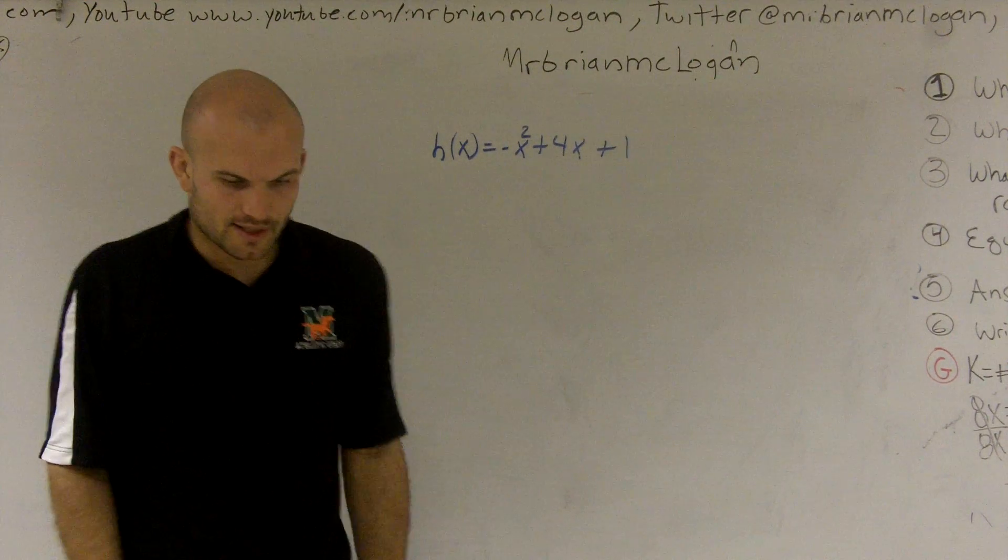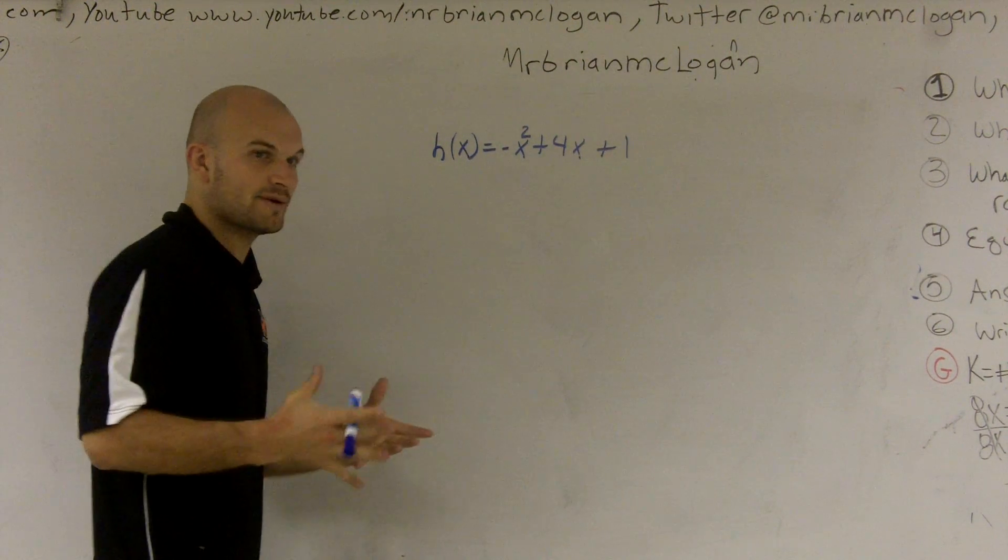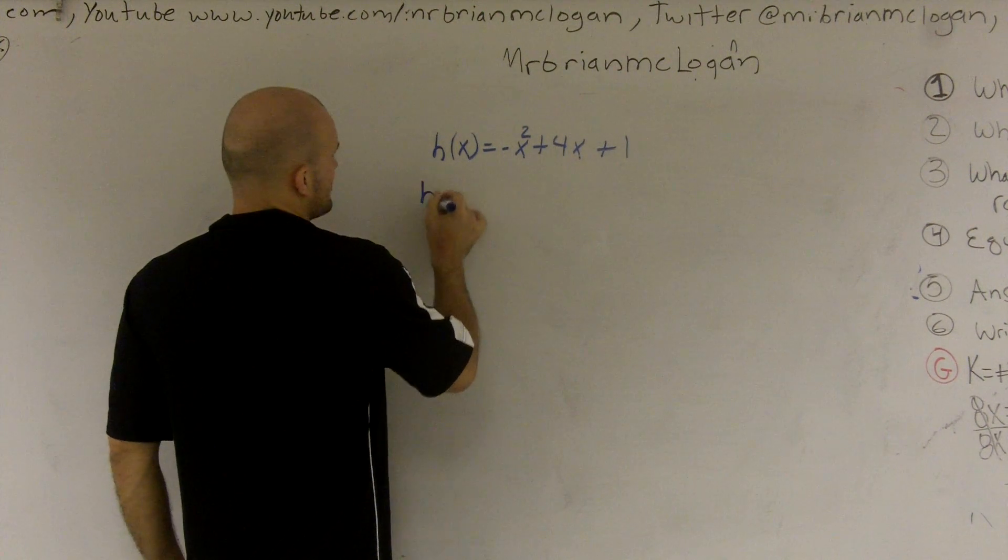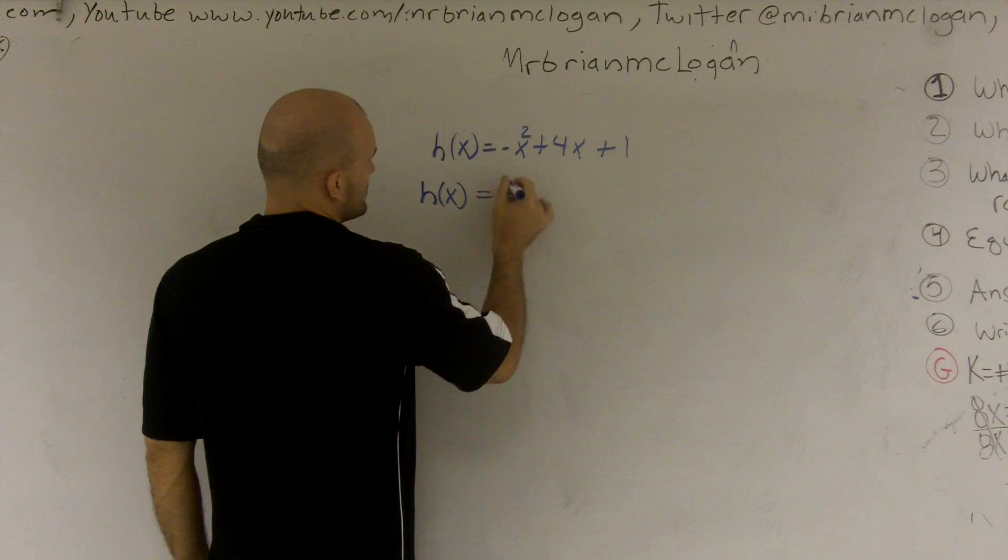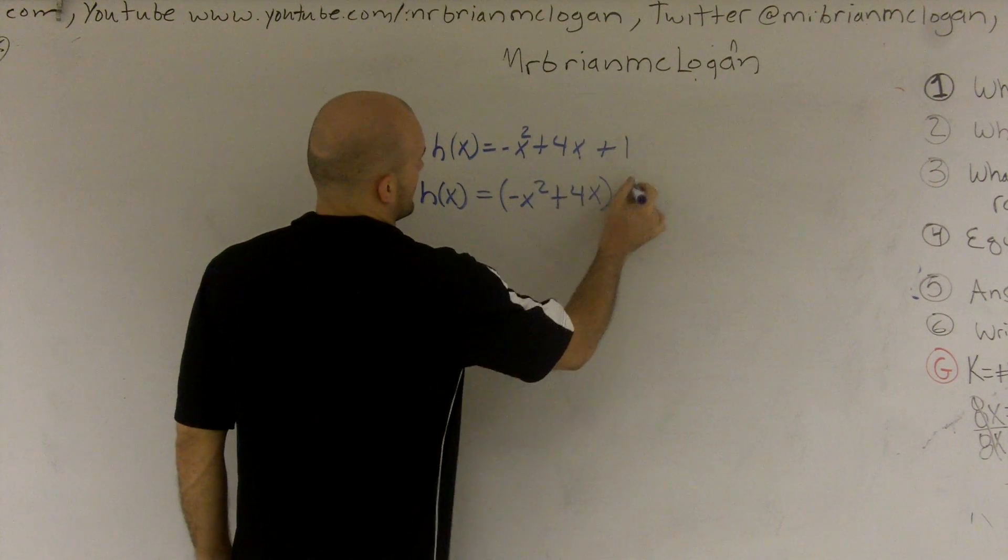So to complete the square, we need to make sure that we isolate our x's. Because remember, we first want to get a perfect square trinomial. So I'm going to say h of x equals negative x squared plus 4x, plus 1.